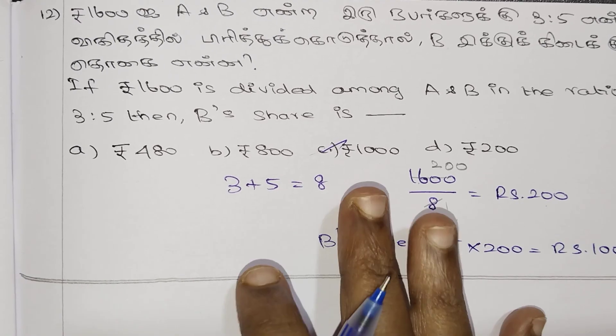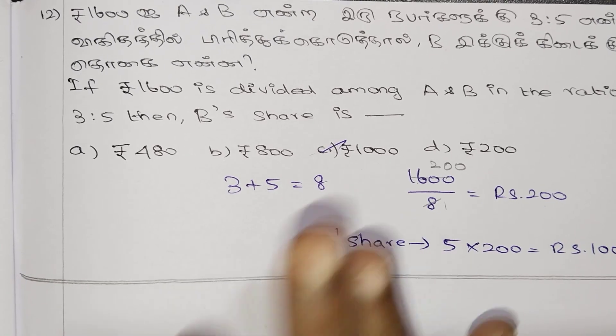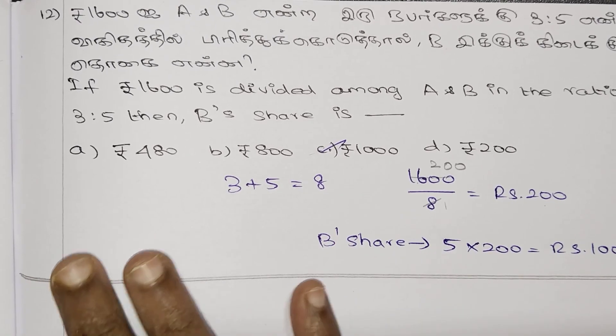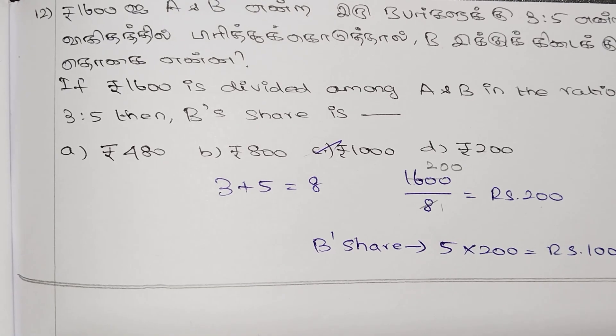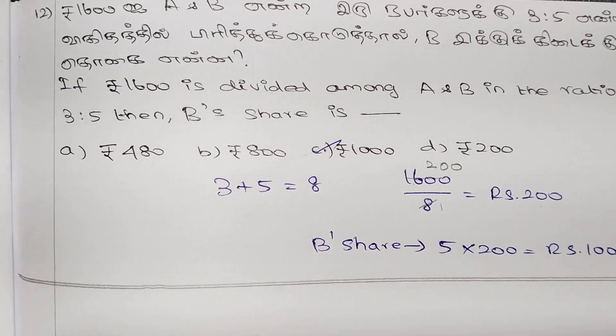X is 3.2 for the sums — that is why we complete the example. Next class, meet. Thank you.